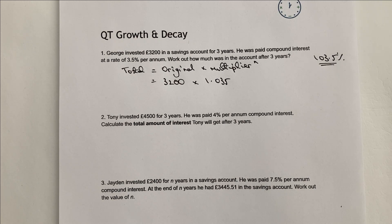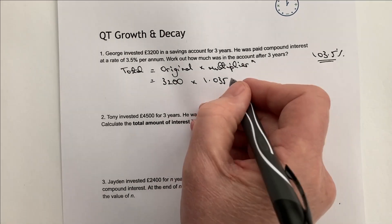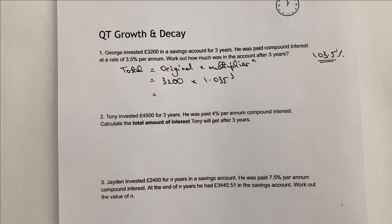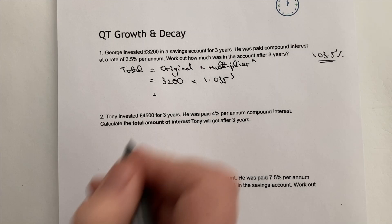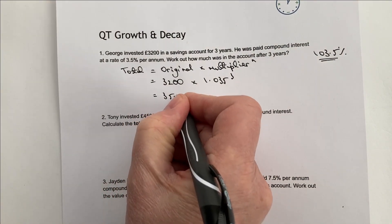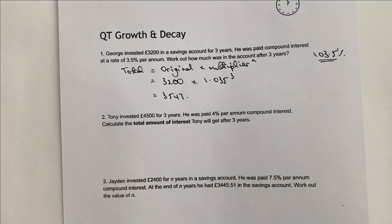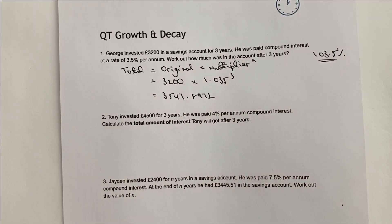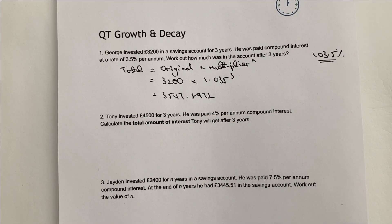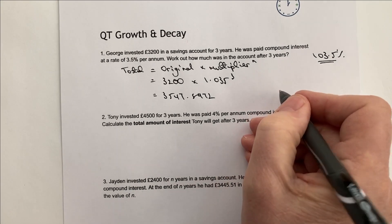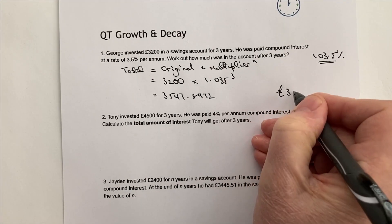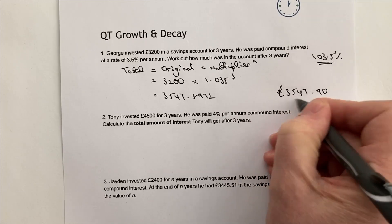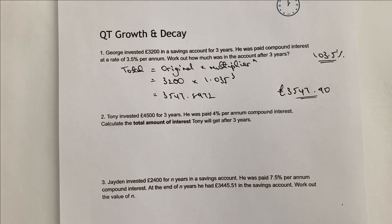And then N, as I mentioned before, is the number of years, which is three. If I put that into a calculator, at the end of the three-year period it's going to give 3,547.8972. For the purposes of this, I'm going to round it to the nearest penny, so that's going to be £3,547.90 as my answer.